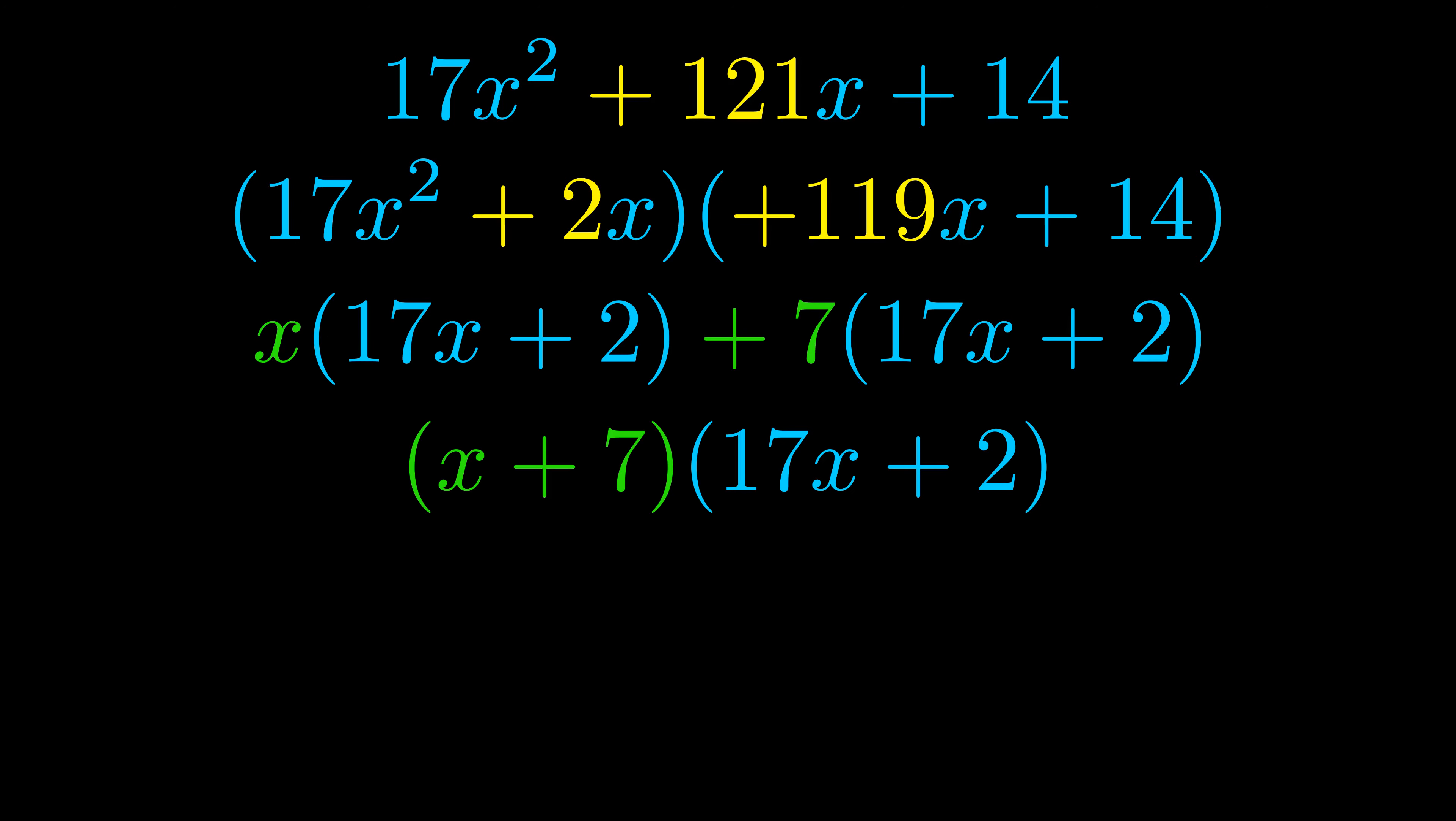Notice also how what remains inside of the parentheses is the same in both cases. The blue values are the same. Those blue values will become one of our factors and we will combine the two green values, the GCFs that we pulled out, to get the other one. And that is our fully factored equation.